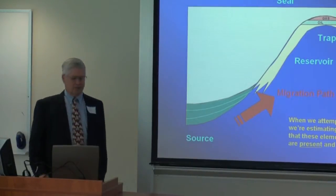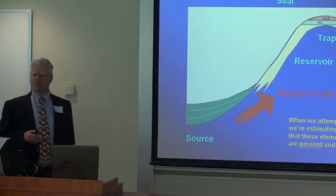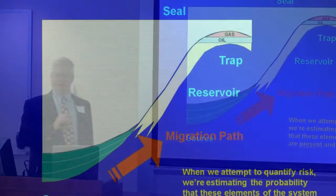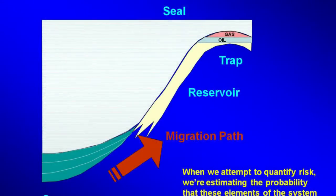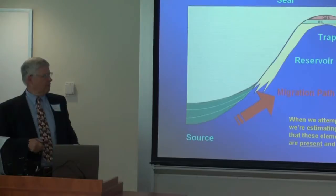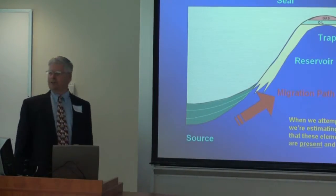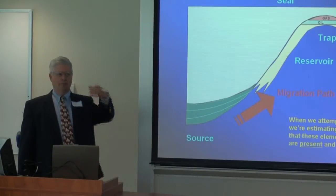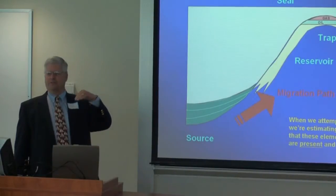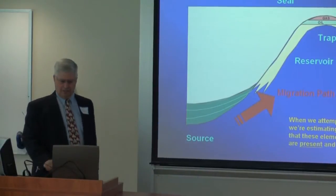When we're talking about risk, we're talking about probabilities — that those elements are not only there but they're effective. Has the source rock been heated enough? Is the migration path effective? Is the reservoir porous enough? Is it permeable, meaning can it pass fluids through? Is the trap and the seals competent to hold it there? To get enough buoyancy of a big thousand-foot-thick column, it's going to try and break through the seal on top. So all of those things have to be effective.